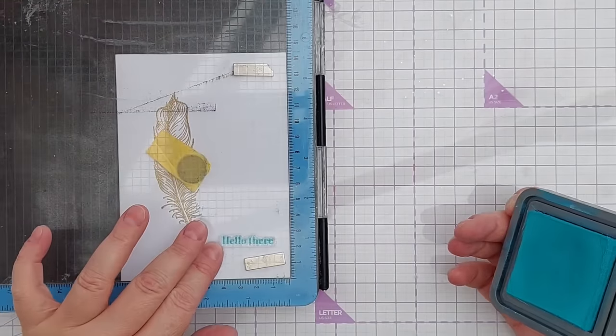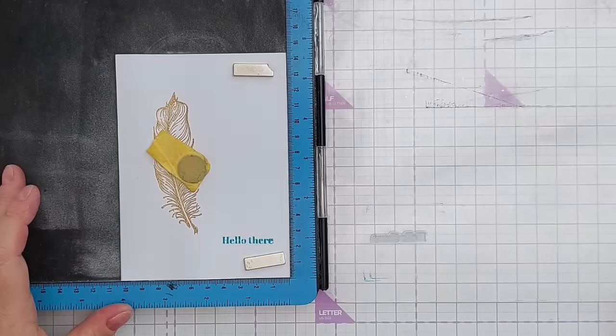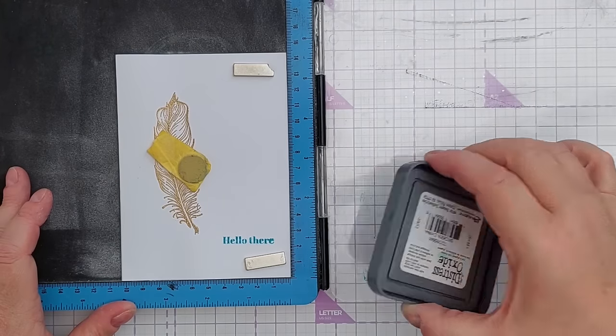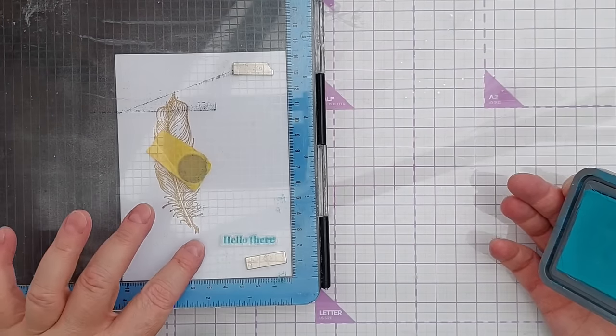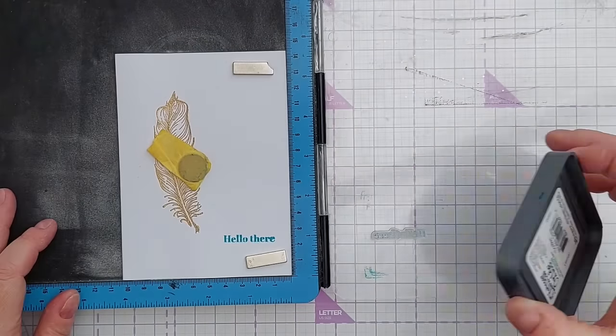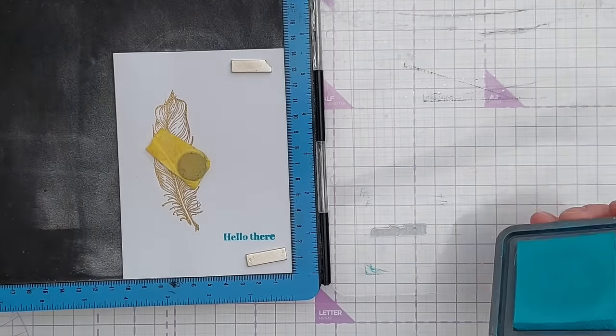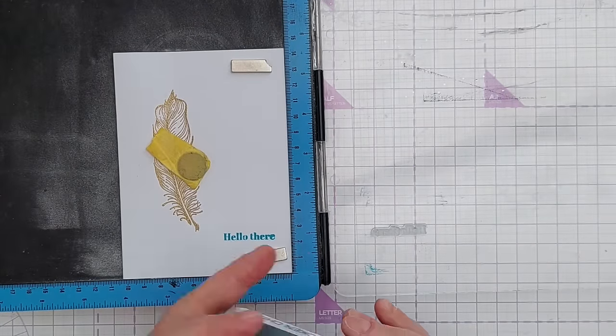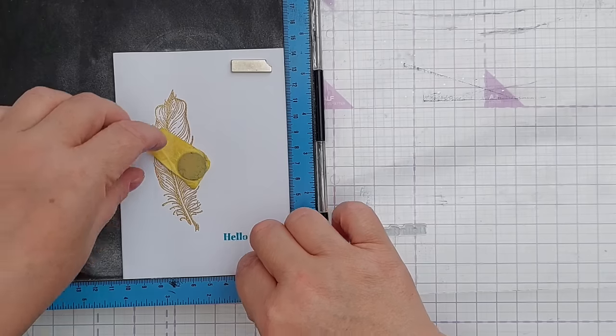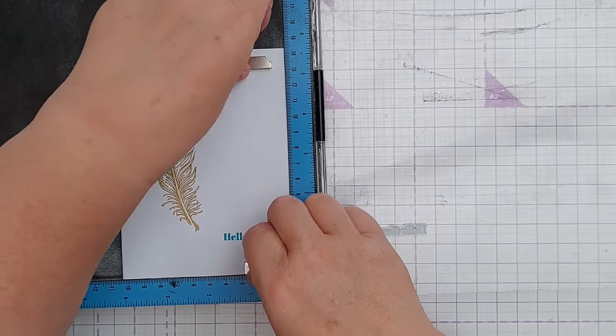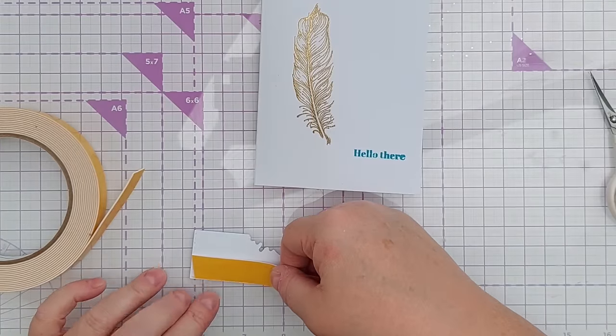And I'm going to stamp this in Broken China. This might take a few goes because it's a silicone stamp as opposed to photopolymer and they don't always stamp brilliantly first few times with distress oxides because they're water-based. In fact, I don't think this one's going to cooperate at all—it's a bit blurry. But what we might do is stamp it separately and stick it on, but I'll do that in a minute.